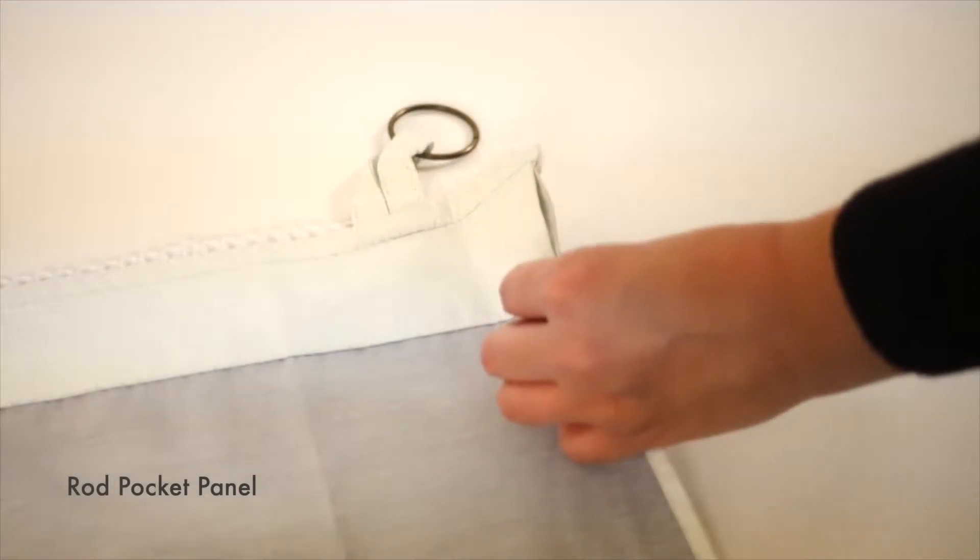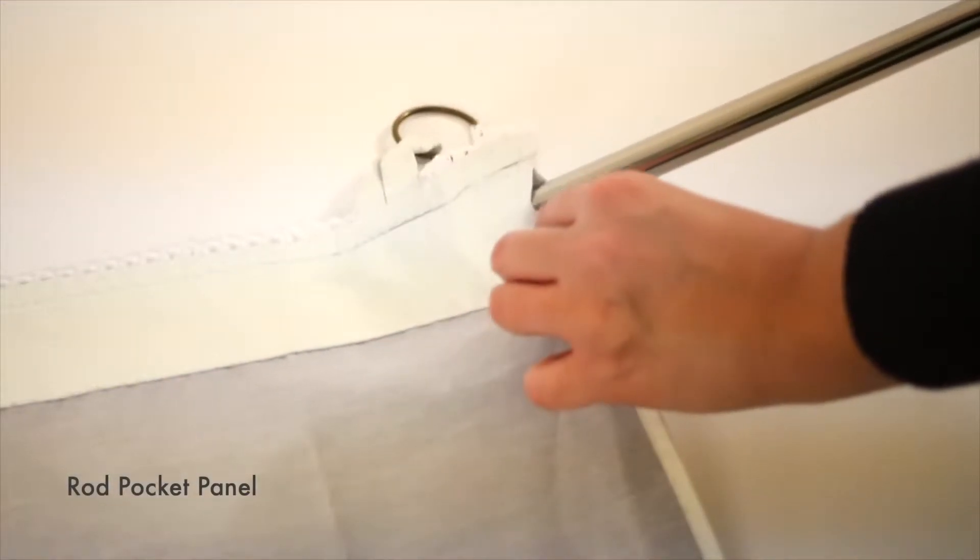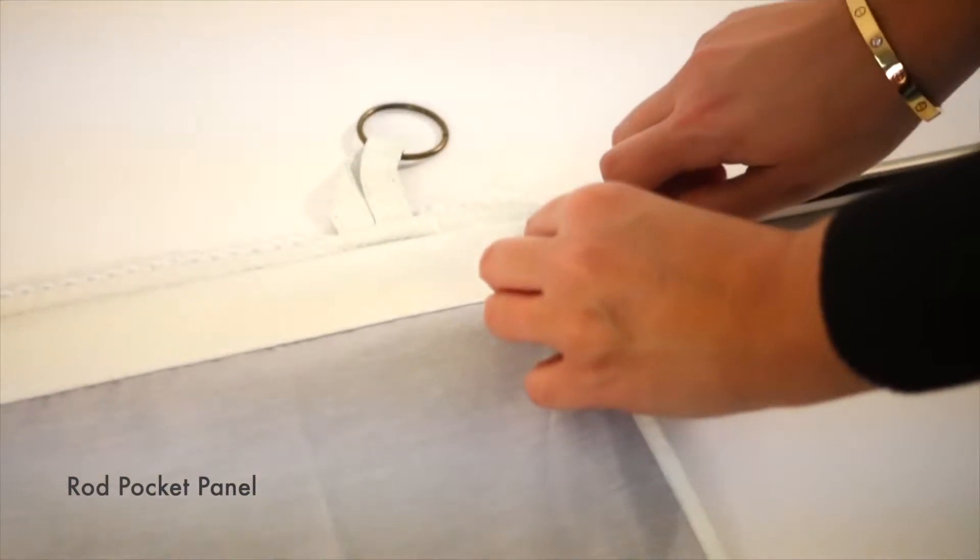Behind a rod pocket panel, use a standard rod and hang the ultimate liner behind your existing curtain.